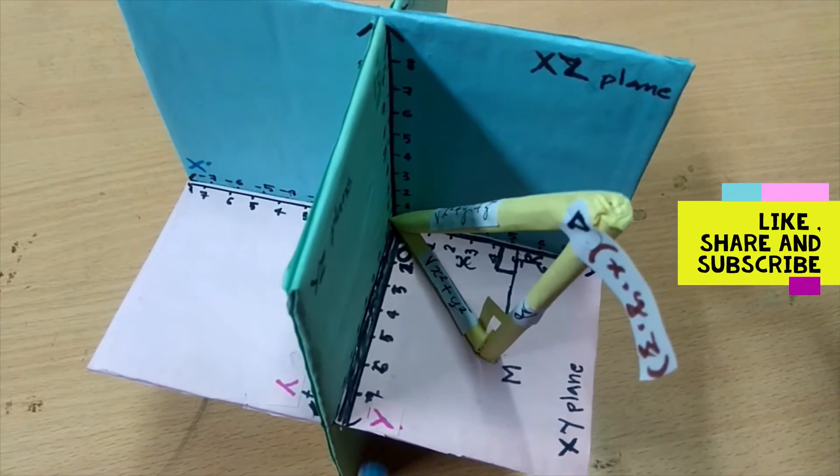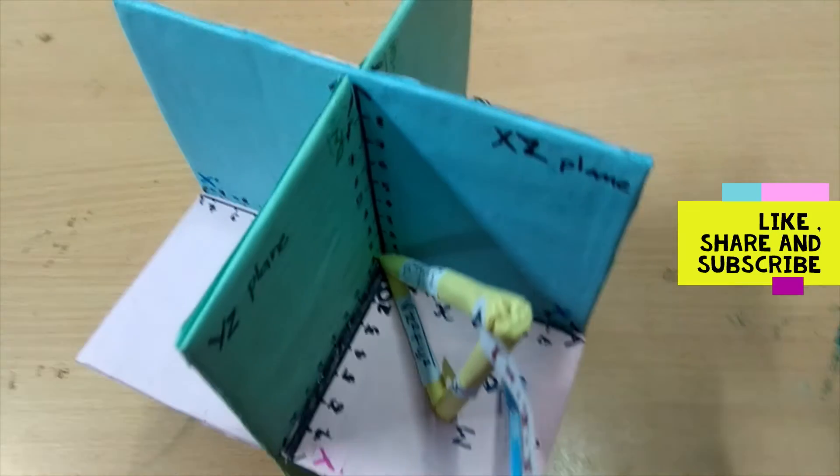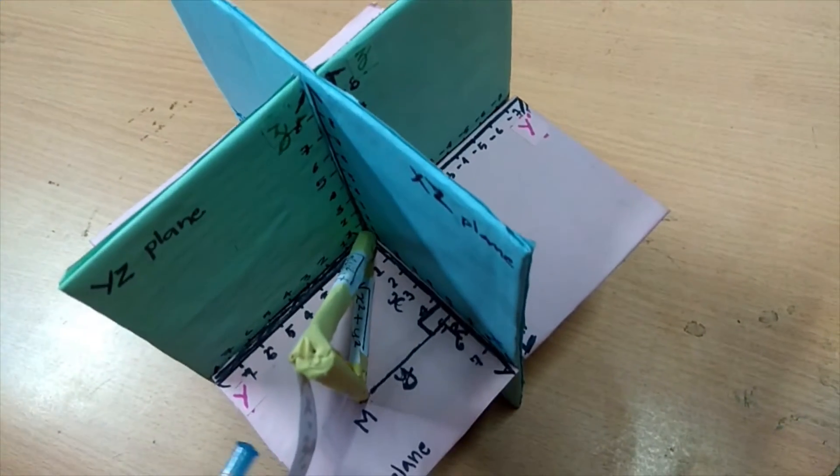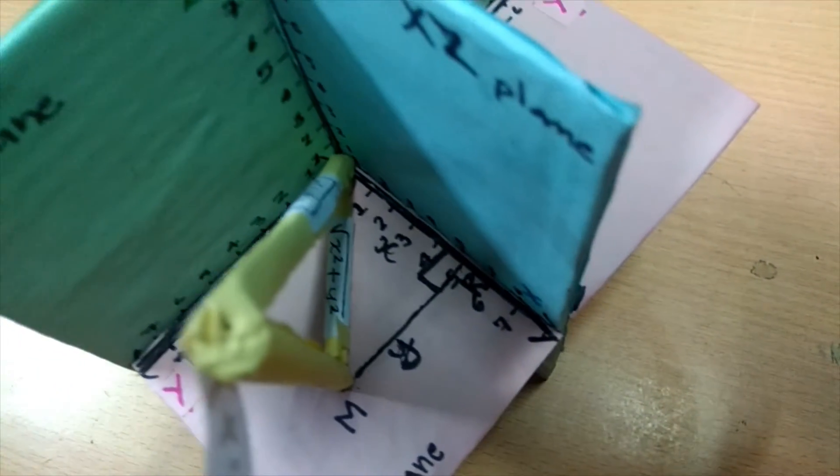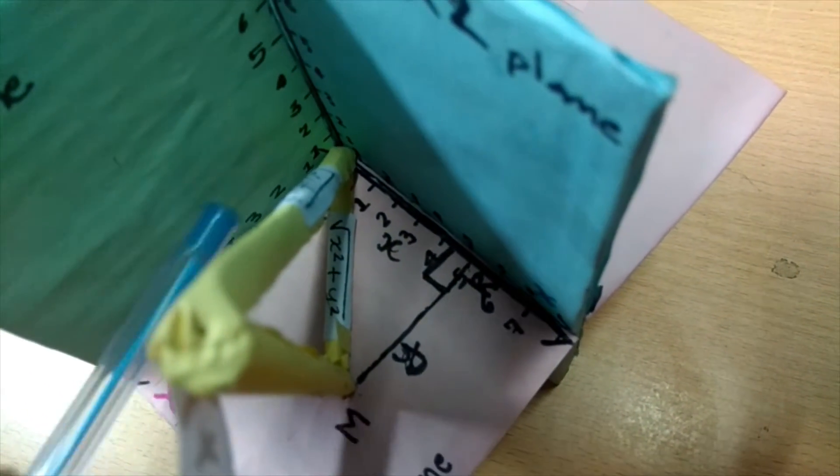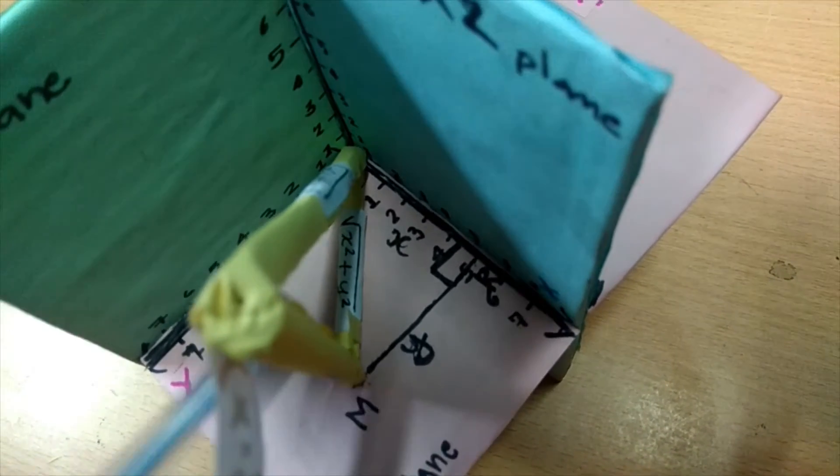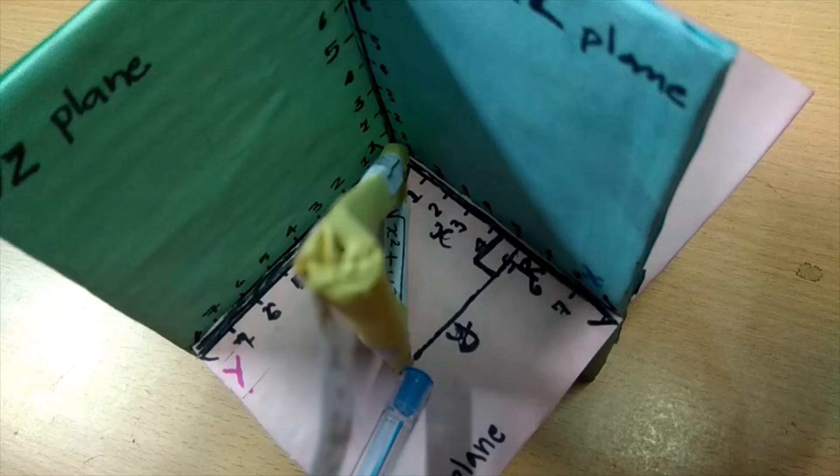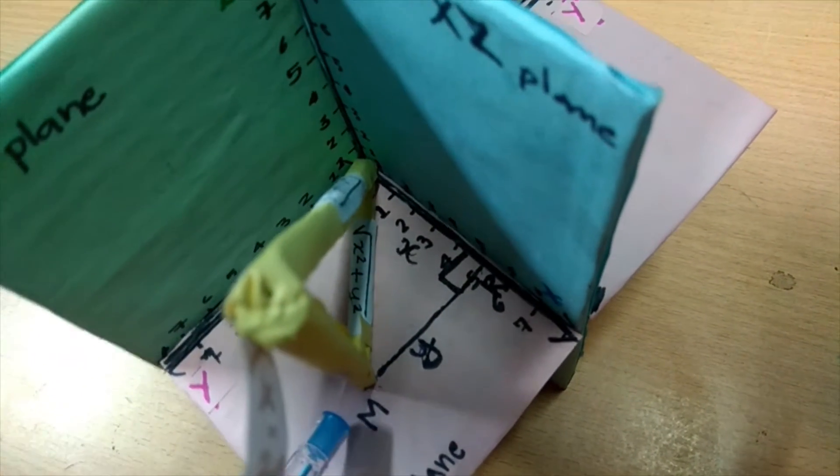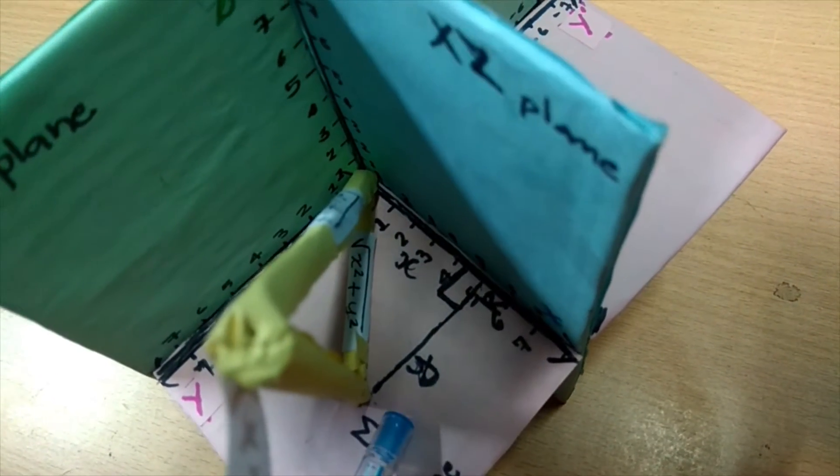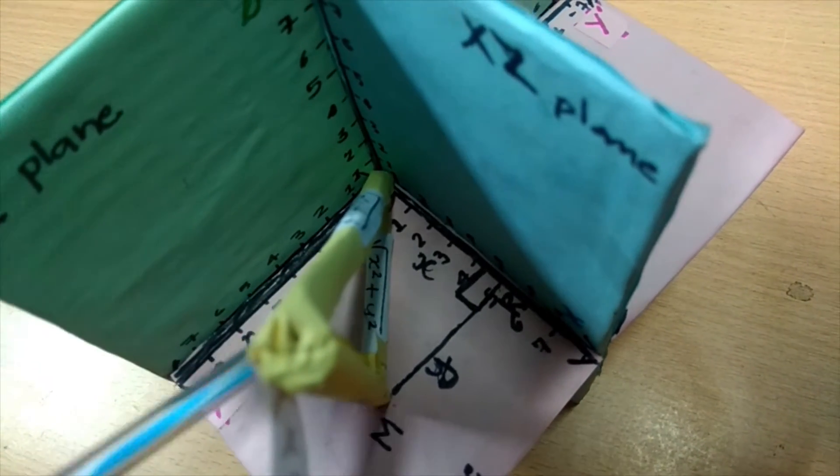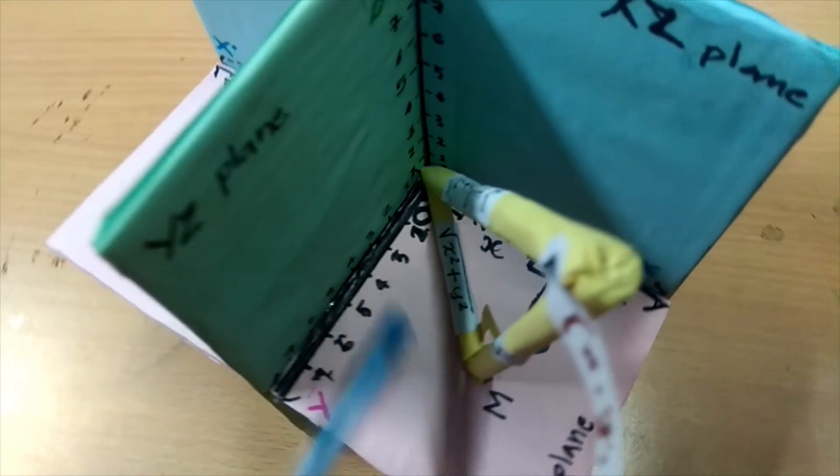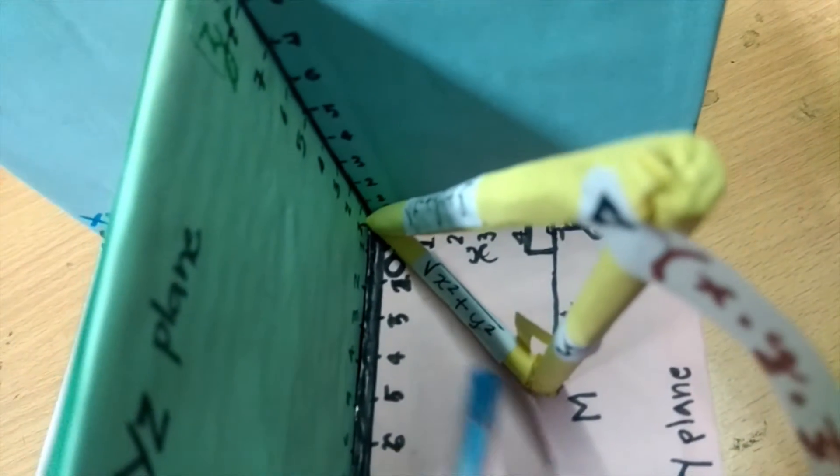Now, triangle OMR is a right angle triangle. So it follows the property of Pythagoras theorem. As we know that Pythagoras theorem is hypotenuse square is equal to perpendicular square plus base square. So OM square is equal to MR square plus OR square is equal to X square plus Y square. OM is equal to under root X square plus Y square.